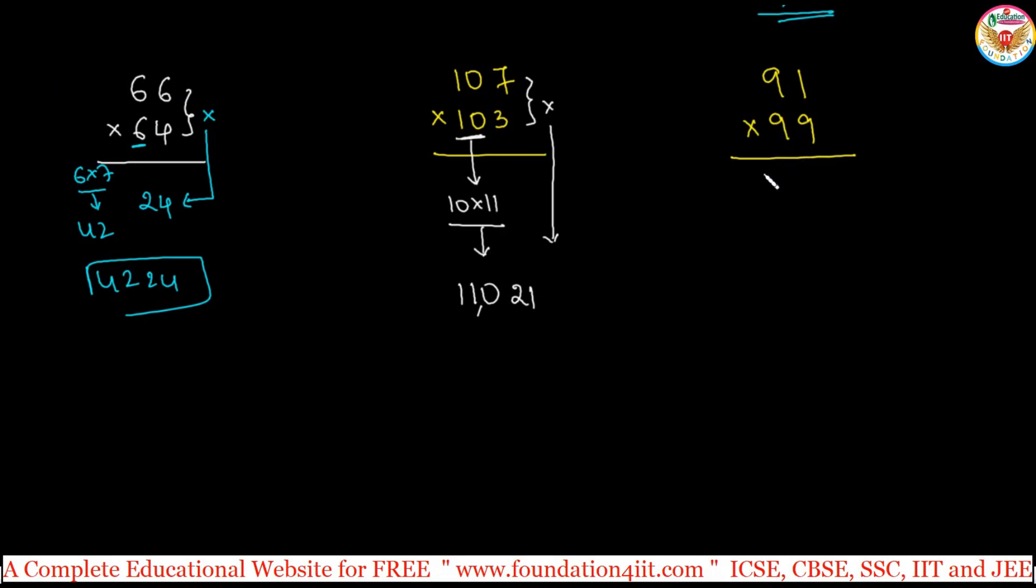But you can make it as a 2-digit number. You should write 09. So remember, here is a simple method: always it is a 2-digit number. Even 1 into 9 is 9, you can take 09.